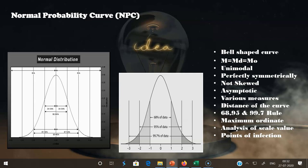The maximum ordinate of the curve occurs at the mean where z = 0, with a value of 0.3989. The ordinate at one sigma is 0.2420, at two sigma is 0.0540, and at three sigma is 0.0044. The scale values are analyzed as: z = (X − M) / σ. The point of inflection occurs at ±1σ from the mean, where the curve changes from convex to concave.